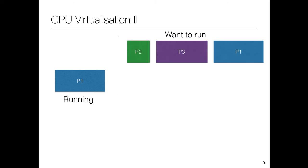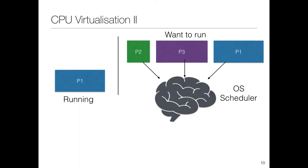Let's look at what the two main components of virtualization are. Say we have process 1 running, and three programs want to run — P2, P3, and P1 again. How do you decide which program runs next? There is a component called an OS scheduler which contains the policies that will decide which program runs next.